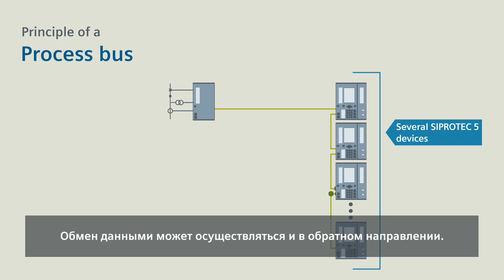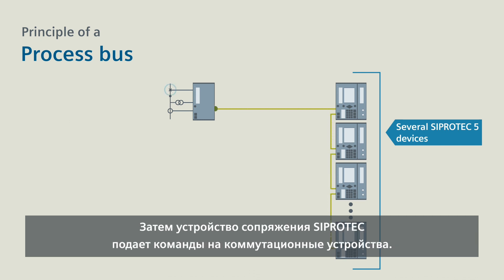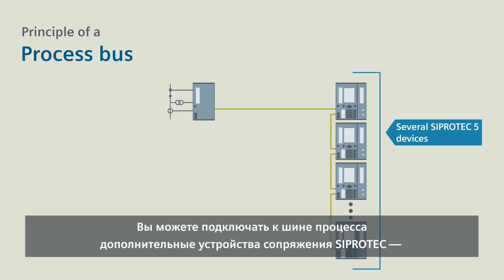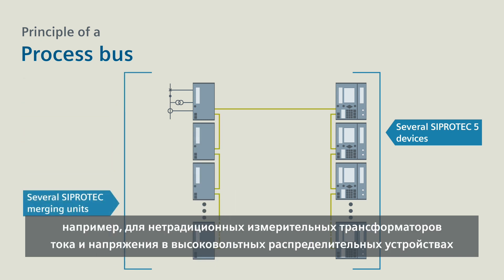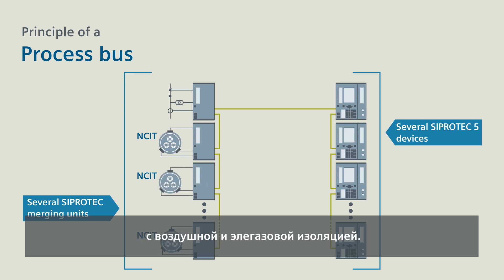Communication also works in the opposite direction. The CProtek merging unit then outputs commands to the switching devices. You can connect further CProtek merging units to the process bus, for example for non-conventional instrument transformers in air-insulated and gas-insulated high-voltage switchgear.